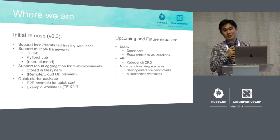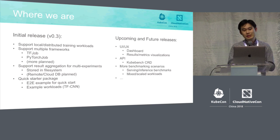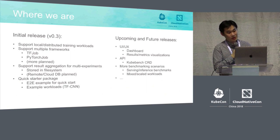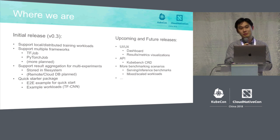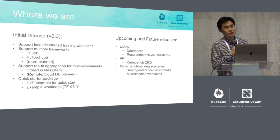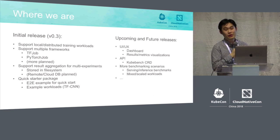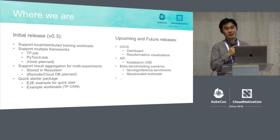Here is where we are today. We have just released our first release, v0.3, along with Kubeflow. For the first release, we provide some simple functionalities: we can support local and distributed training workloads, and we can support two frameworks right now — TensorFlow job and PyTorch job — with plans to support more in the future. For results aggregation, we are able to aggregate results in the file system and will soon support cloud database-based result aggregation. We also provide an end-to-end simple example for new users to get started quickly, with a TensorFlow CNN example included.